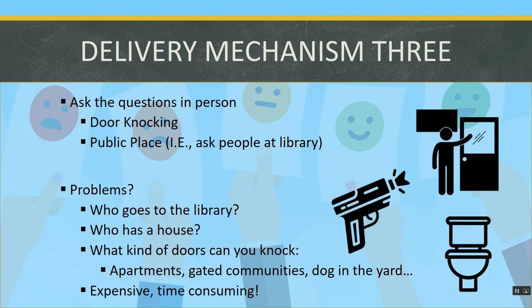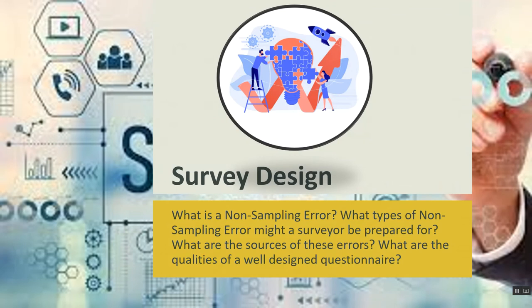Public gathering place polls present their own problem: depending on where you choose to administer the poll, you get very different people. Polling at a church gives you a very different group than polling at a casino or strip club, so you're not giving everybody an equal probability of inclusion. This is why a truly random sample is almost impossible to obtain — all delivery mechanisms systematically bias results. The goal is to get as close to the ideal as possible and acknowledge any shortcomings and how they might skew your results.